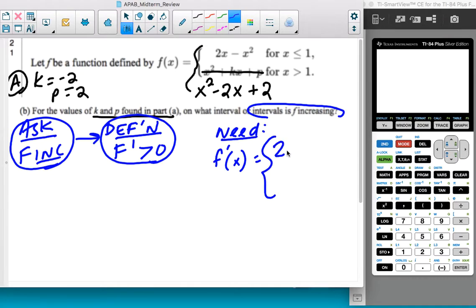So when I differentiate, I get 2 minus 2x for x values less than or equal to 1 because I can say equal to now because I know that it's differentiable. And when I differentiate the second one, I get 2x minus 2 for x values that are greater than 1.